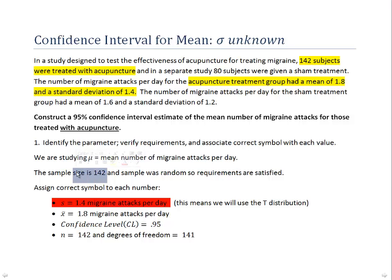In the next step, we have to make sure that the requirements are satisfied. The sample size is 142, and our requirement is that either the distribution we're sampling from is normal, which could well be true, or the sample size is greater than 30. Certainly 142 is much greater than 30, so regardless of whether the original distribution is normal or not, we've easily satisfied the requirements.